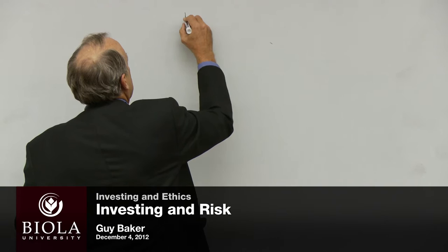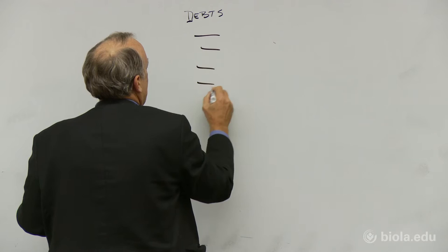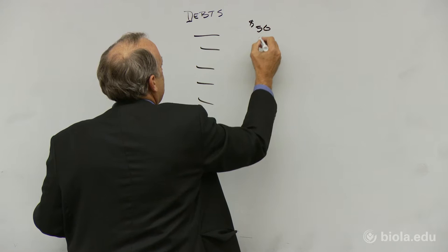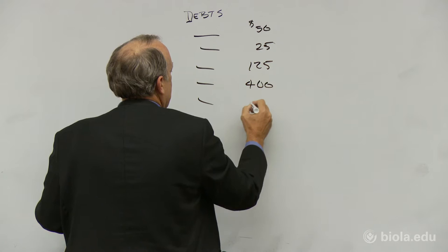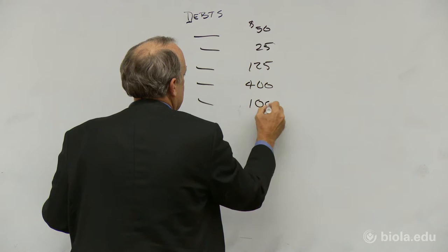Let's assume you have a list of debts - maybe three or four. This one costs you $50 a month, this one costs you $25 a month, this one costs $125 a month - here's your car payment.